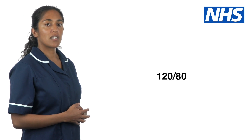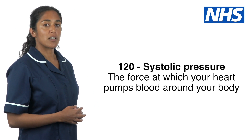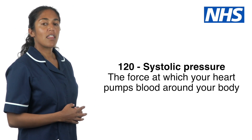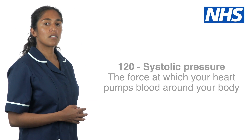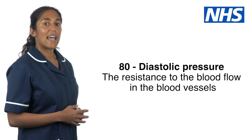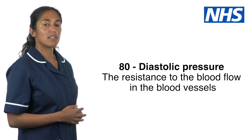A BP measurement includes two numbers, for example 120 over 80. The top number, 120 in this example, is called the systolic blood pressure. This is the pressure generated when your heart pumps. The bottom number, 80 in this example, is the diastolic blood pressure. This is the pressure when your heart is resting between beats.